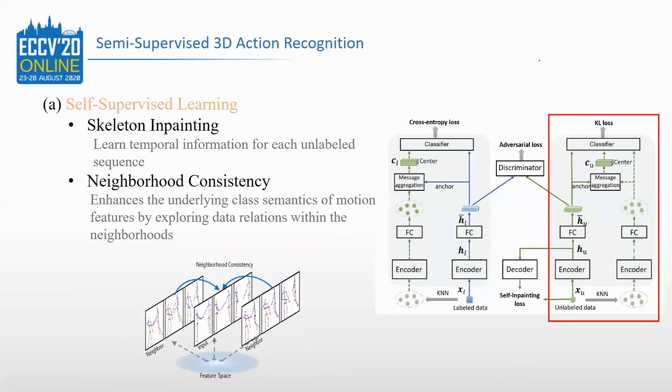However, neighborhoods can be considered as tiny sample-level clusters with high class consistency. So, in this feature space, we select the neighbors and require that the samples within neighborhoods have similar predictions, which can learn the underlying class concept of the motion features by neighborhood consistency.